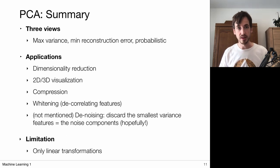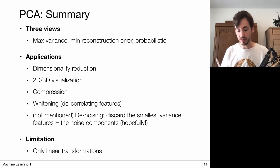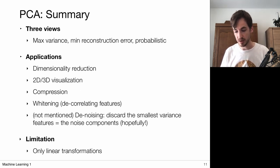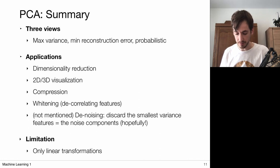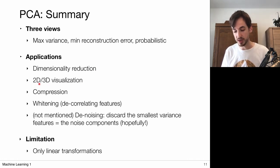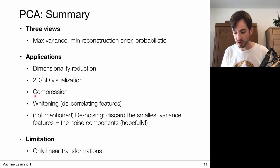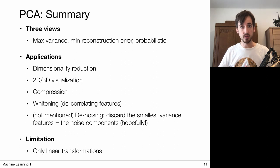That wraps up principal component analysis. We covered three views: first, finding a lower-dimensional subspace that preserves maximal variance upon projection; second, minimizing reconstruction error when recovering original data from the lower-dimensional space; and third, a probabilistic continuous latent variable modeling approach. Applications include dimensionality reduction, 2D or 3D visualization of high-dimensional point clouds, compression, whitening or decorrelating data features, and denoising — by discarding components considered noise, we obtain representations free of that noise.